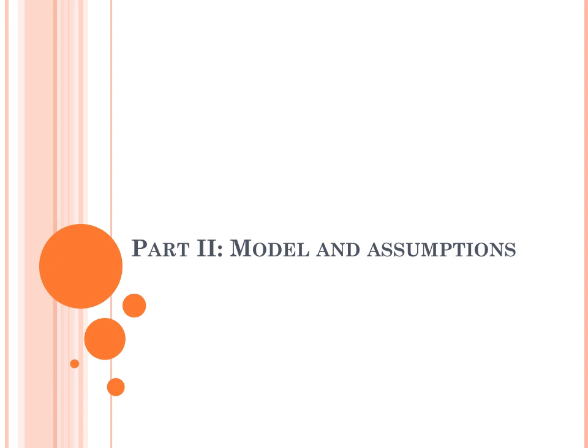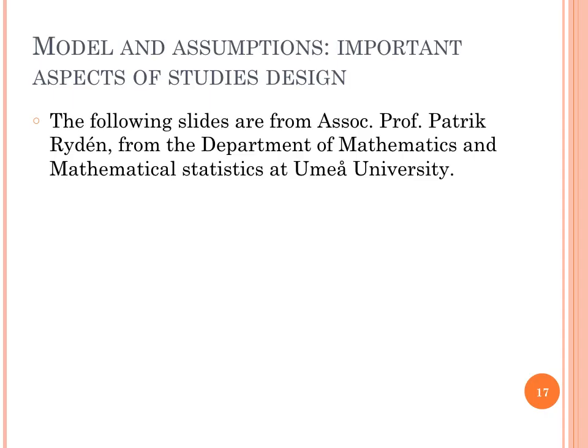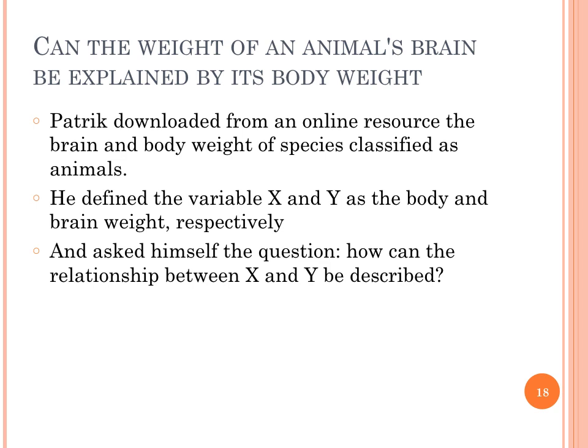The following slides are from Patrick Rudin, an associate professor at the Department of Mathematics and Mathematical Statistics at Umeå University. Patrick had the following hypothesis: can the weight of an animal's brain be explained by its body weight? He downloaded from an online resource the corresponding weights of species classified as animals. He defined X and Y as the body and brain weight respectively. His first question was then: what is the best approach to model the relationship between X and Y?